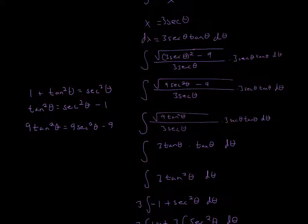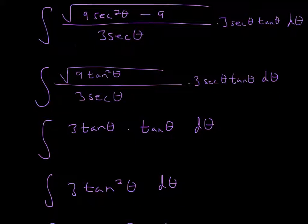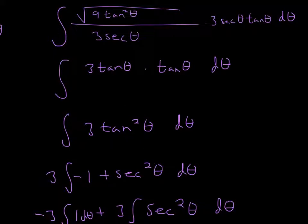We can simplify even further. The square root of 9 tan²θ gives us 3 tan theta. We also have 3 secant theta in the numerator from the x substitution, and 3 secant theta tan theta from dx. The 3 secant theta terms cancel, leaving us with 3 tan theta multiplied by tan theta, which is 3 tan squared theta.